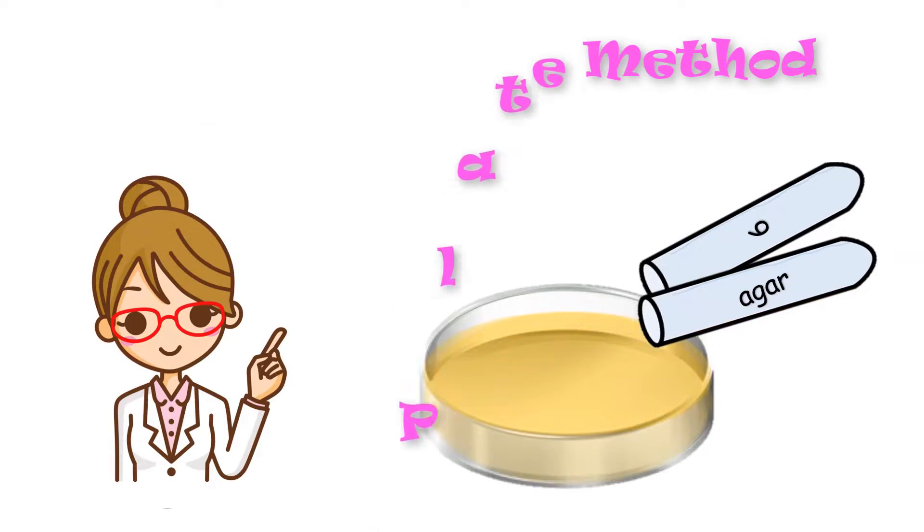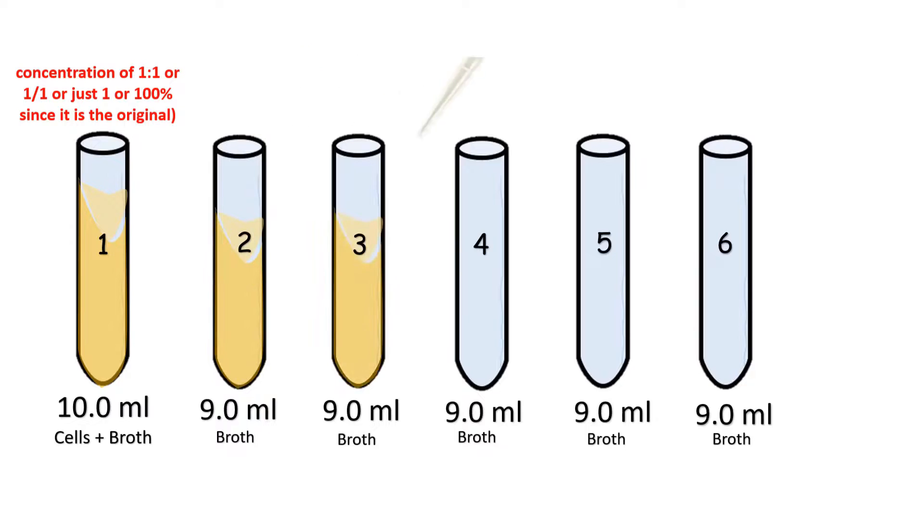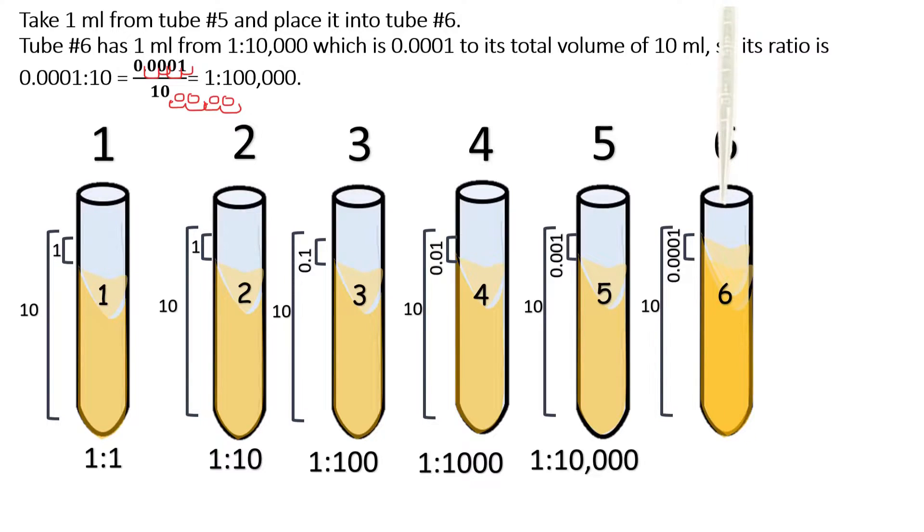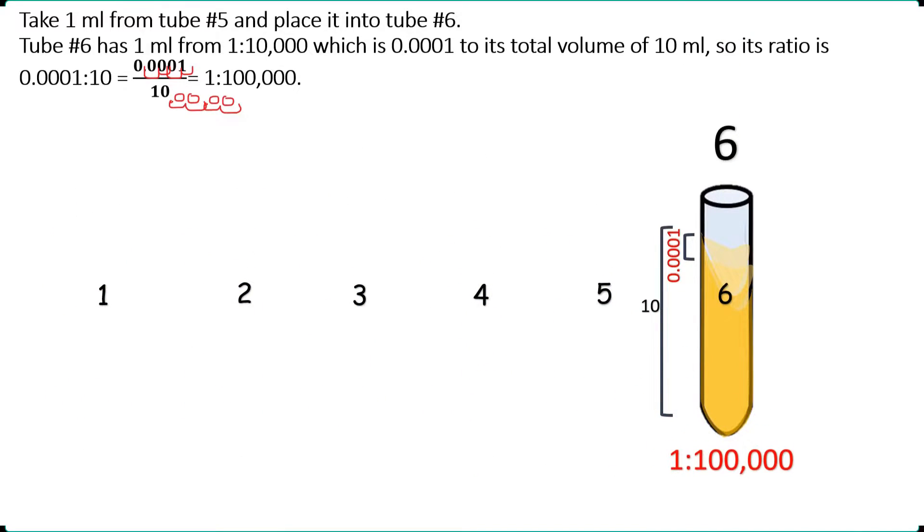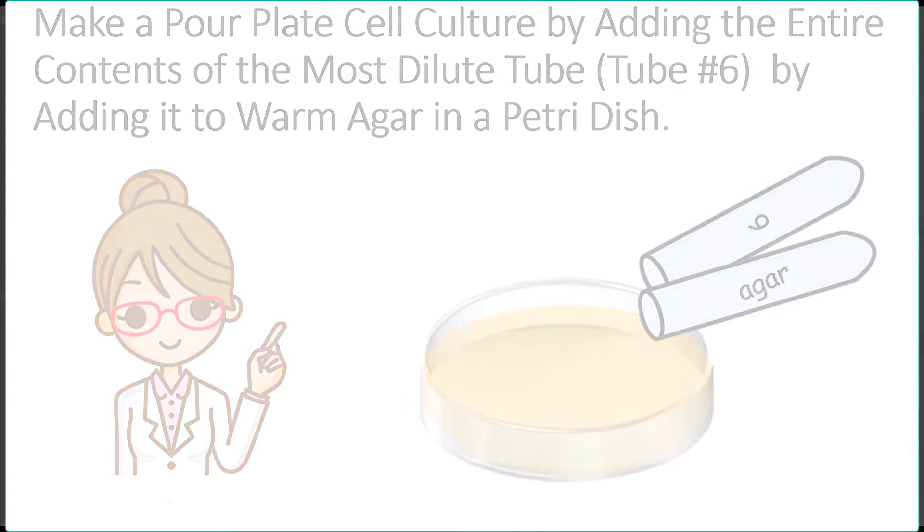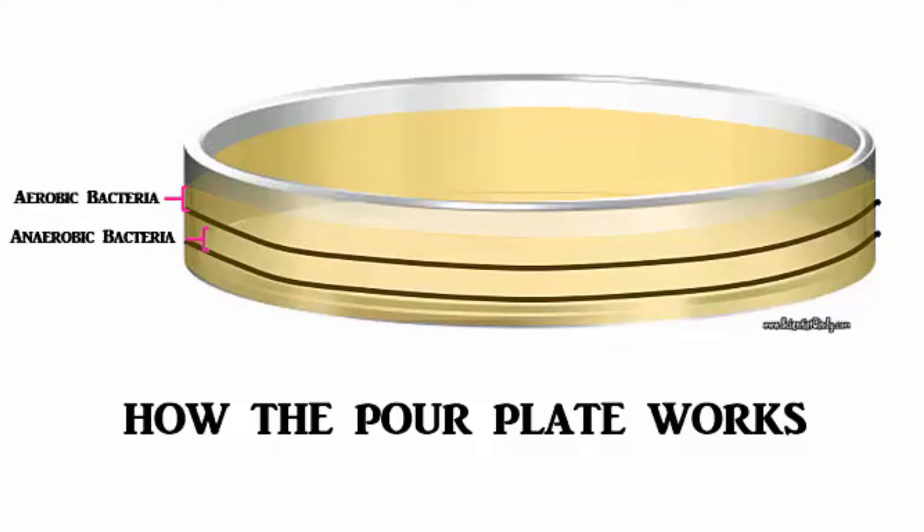In this technique, colonies are isolated through a series of dilutions. The final dilution is then added to warm agar in a petri dish. The dish will produce colonies after an incubation period.